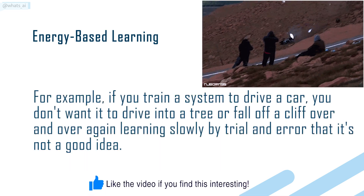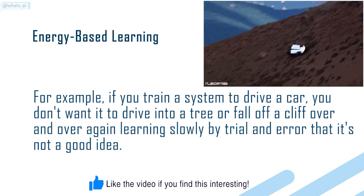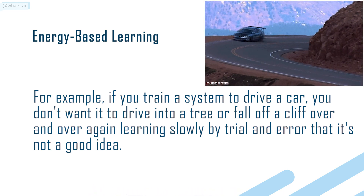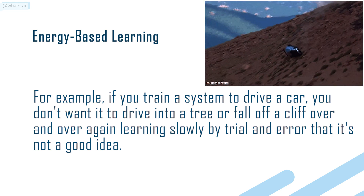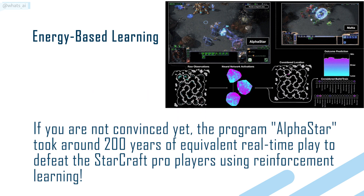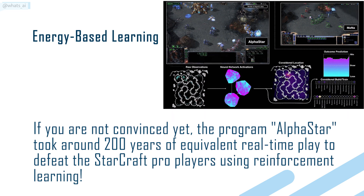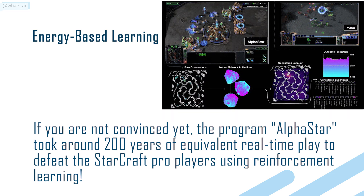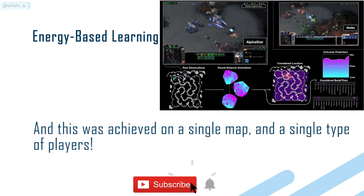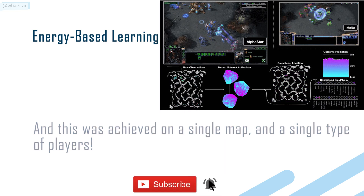For example, if you train a system to drive a car, you don't want it to drive into a tree or fall off a cliff over and over again, learning slowly by trial and error that it's not a good idea. If you are not convinced yet, the program AlphaStar took around 200 years of equivalent real-time play to defeat the StarCraft Pro players using reinforcement learning, and this was achieved on a single map with a single type of players.